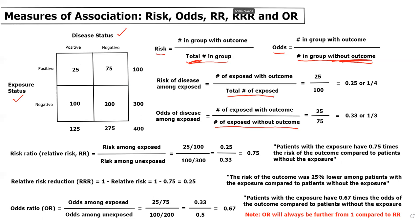These values can then be used to calculate relative measures of association. One common one is the risk ratio, otherwise known as the relative risk, or RR. This is calculated by taking the risk among the exposed divided by the risk among the unexposed. The risk among the exposed is 25 over 100, and the risk among the unexposed is 100 over 300, giving us 0.25 over 0.33, which equals 0.75. In words: patients with the exposure have 0.75 times the risk of the outcome compared to patients without the exposure.